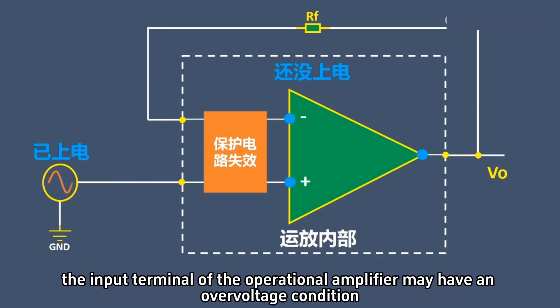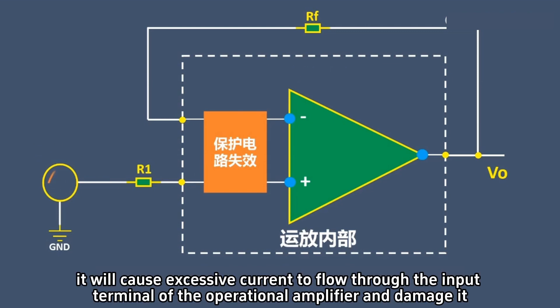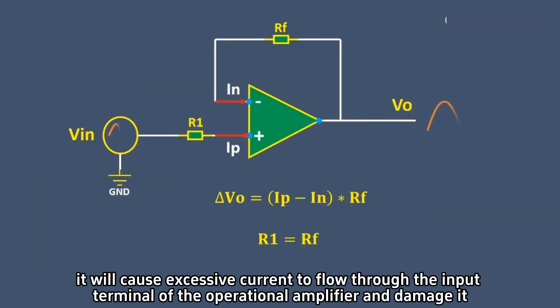At this time, the input terminal of the operational amplifier may have an over-voltage condition. If a resistor R1 is not connected in series, it will cause excessive current to flow through the input terminal of the operational amplifier and damage it.